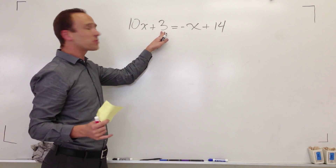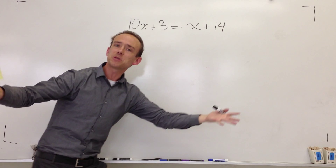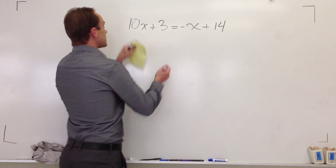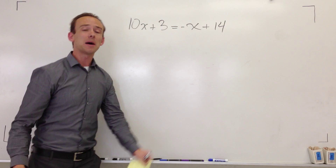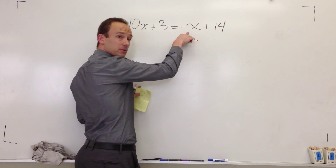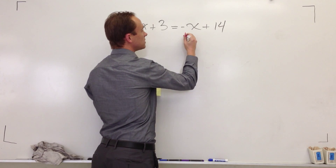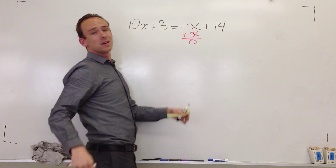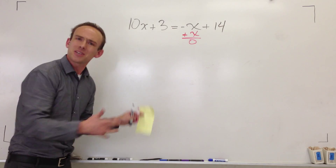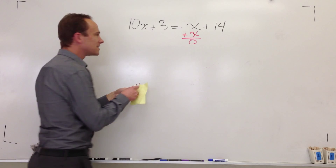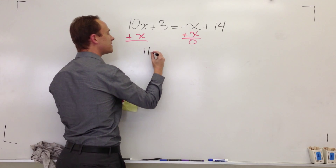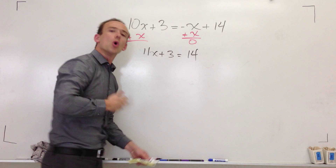Assuming you hit play, let's talk. Right now, if you wanted to get rid of the 3 you could, if you wanted to get rid of that x you could — there are a lot of options. But our last strategy was to get rid of the x's first, so that's what I'm going to do. Now this is a 10x and a negative 1x. I'm always going to get rid of the smaller, and a negative number is always smaller than a positive number. So I'm getting rid of minus 1x — just add x. You must do it to both sides of the equation. So I got 10x plus x, which gives me 11x plus 3 is equal to 14.